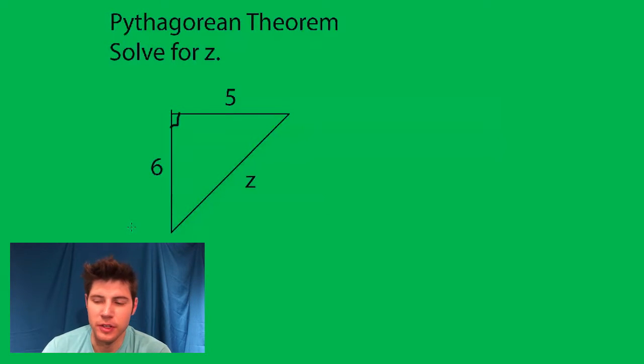Hey guys, so we're going to use Pythagorean Theorem to solve this right triangle, and the formula is a squared plus b squared equals c squared.